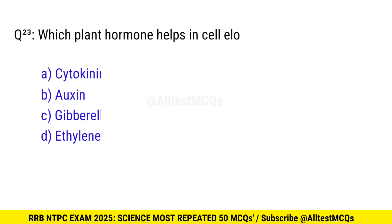Question 23. Which plant hormone helps in cell elongation? Right option is B, auxin.